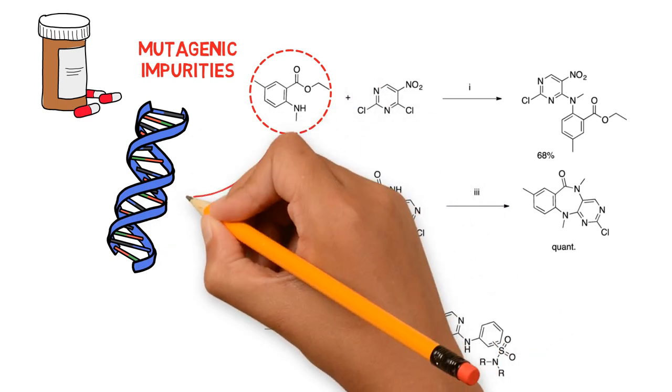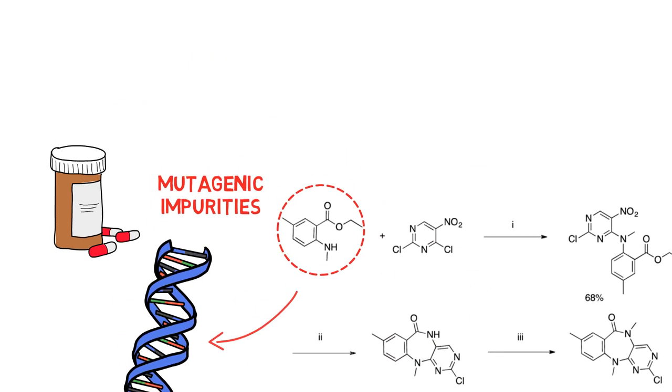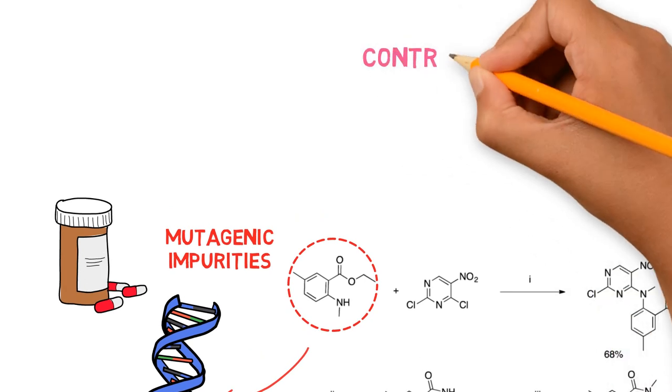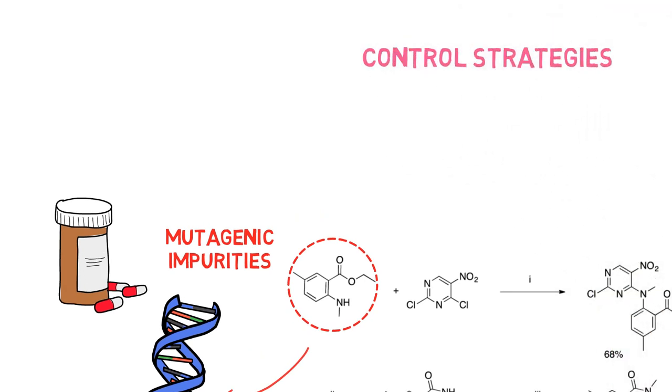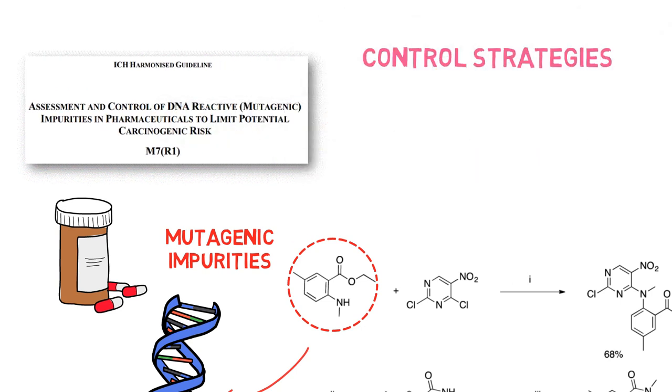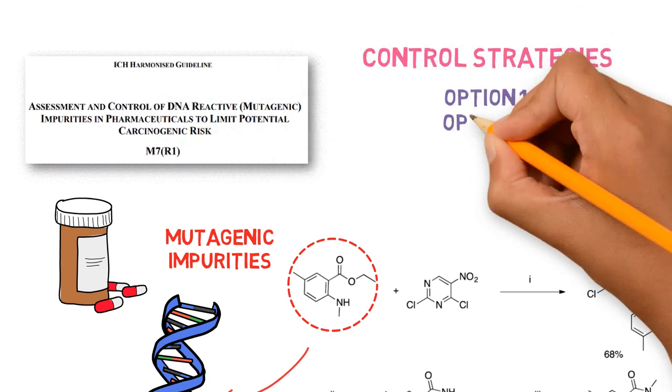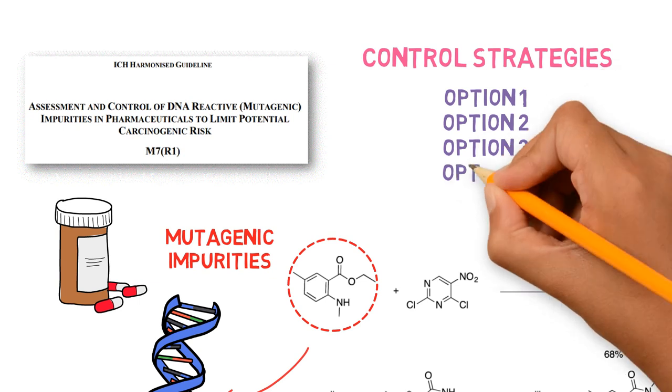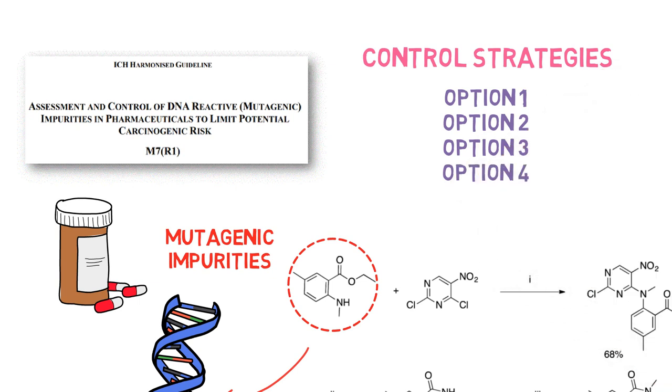However, this is not a problem if these impurities are below the safe limits and control strategies are in place. This is regulated by ICH M7, a guideline which describes four different options of control strategies that can be adopted for mutagenic impurities. To know more about these options, watch our previous video about ICH M7.